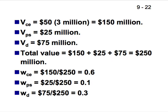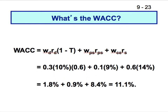The WACC is the weighted average cost of capital. Cost of common equity times its weight: 0.6 × 14%. Preferred stock: 0.1 × 9%. For debt, we make the tax shield adjustment: 0.3 × 10% × (1 − T). With a 40% tax rate, adding them all up gives a weighted average cost of capital of 11.1%.